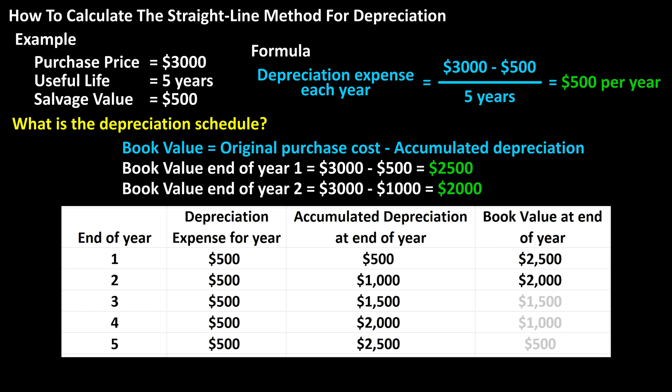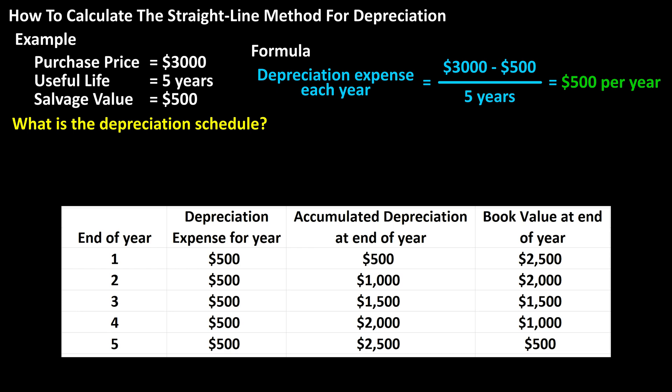And here are the other book values for years 3, 4, and 5. In the end, the book value after the last year of useful life — in this example year 5 — should match the salvage value we started with. And it does, as it is $500.